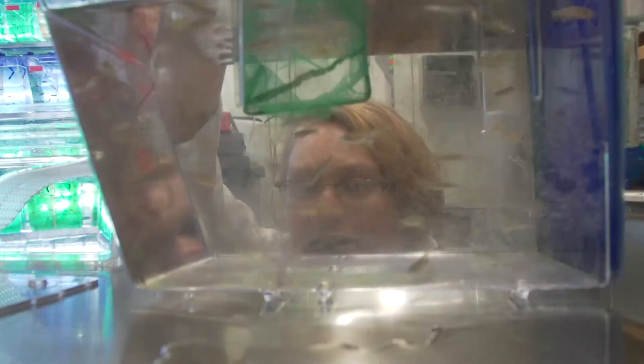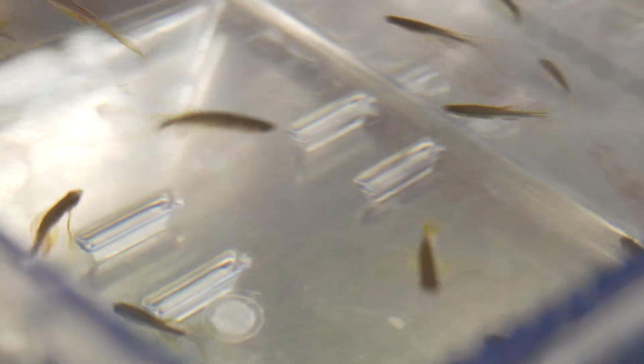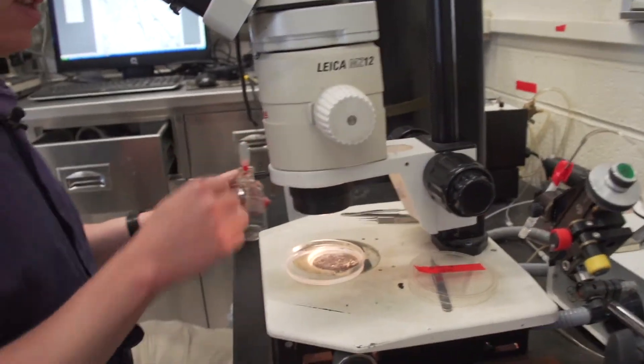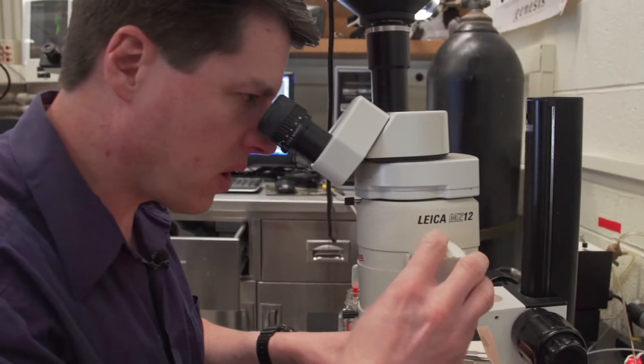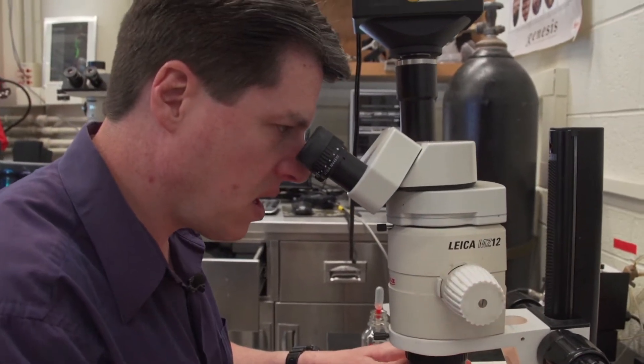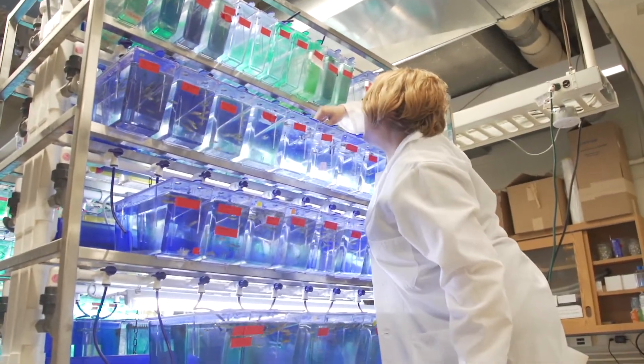Right now in the lab, we are using the fish to take a look at development of the stem cell compartments in the intestine. There are committed stem cells that produce the cells that line the intestine. Within the adult intestine, there is a continuous turnover of those cells.